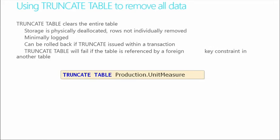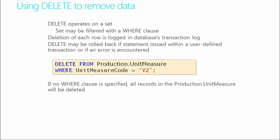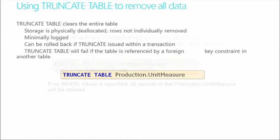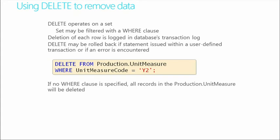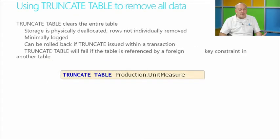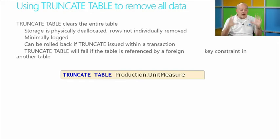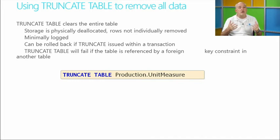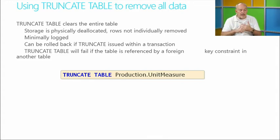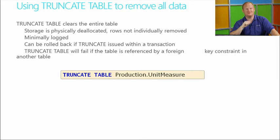If you want to delete everything from a table, you could use DELETE without a WHERE clause, but note that this is logged in your transaction log. Another option is TRUNCATE TABLE — this removes all data from the table without dropping the table itself. The advantage is minimal logging compared to a full DELETE, so it goes much faster. If you have 40, 50, 60, 70,000 rows — or even a billion rows — there will be a significant performance difference using TRUNCATE.